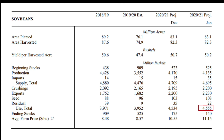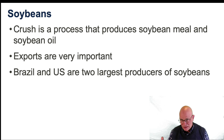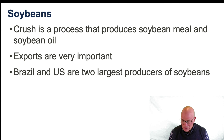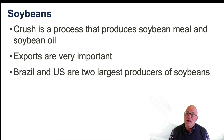Our ending stocks for soybeans are 140 million bushels. To summarize: crush is the process that produces soybean meal and soybean oil. Exports in soybeans are very important. The two largest soybean producers in the world — and they run neck and neck currently — are Brazil and the U.S. This shows a supply and use WASDE report that's reported every month and gets a lot of press — WASDE supply and use accounting.